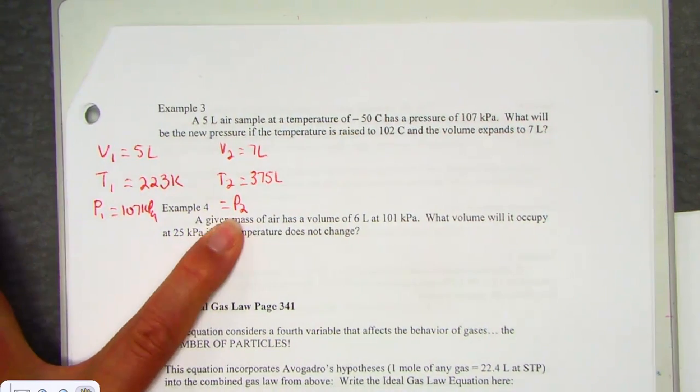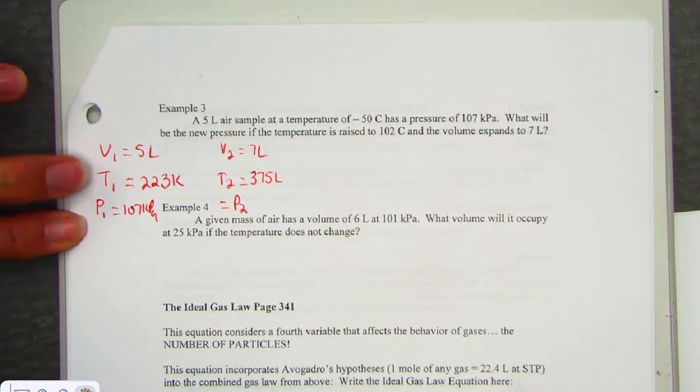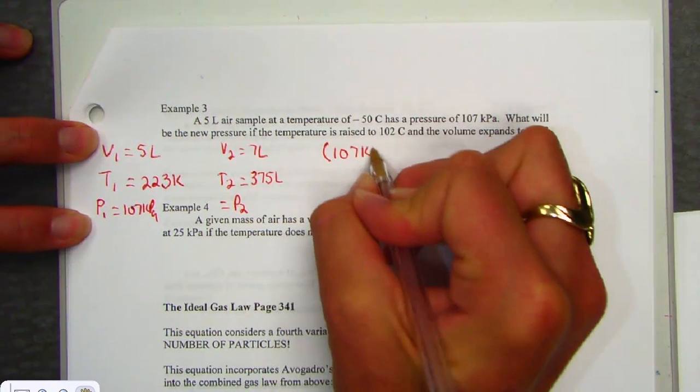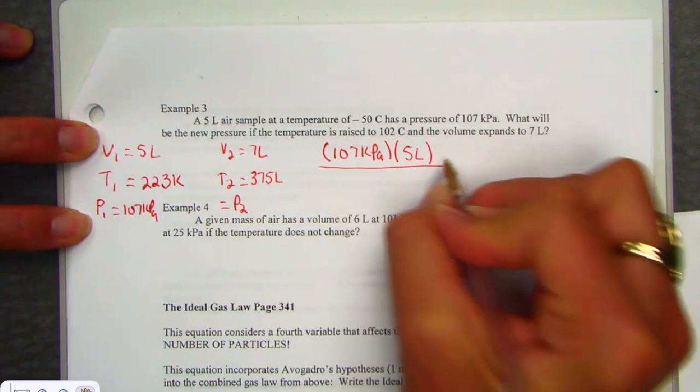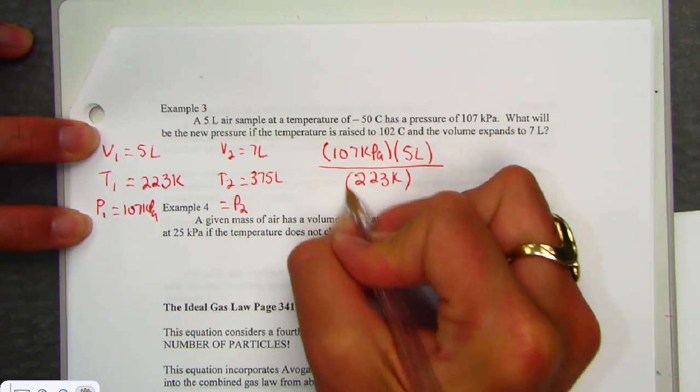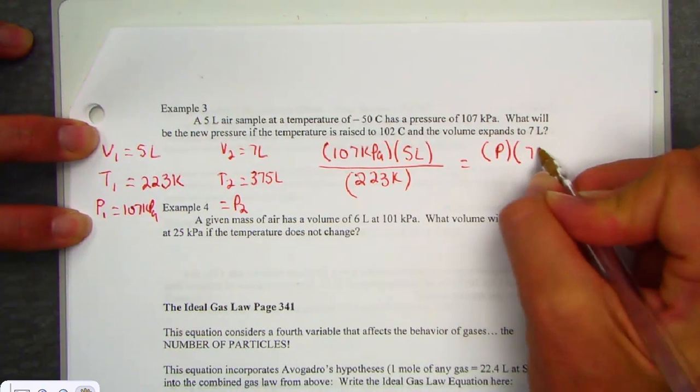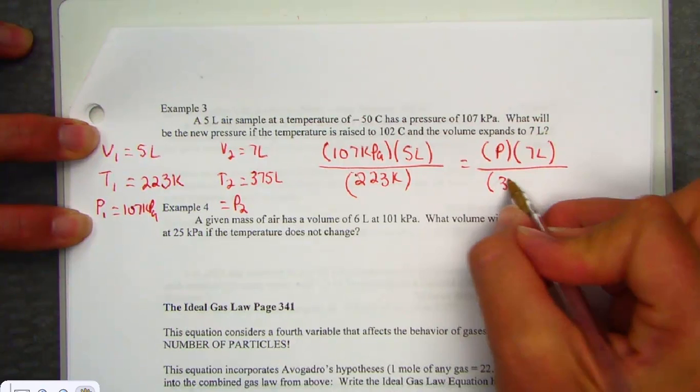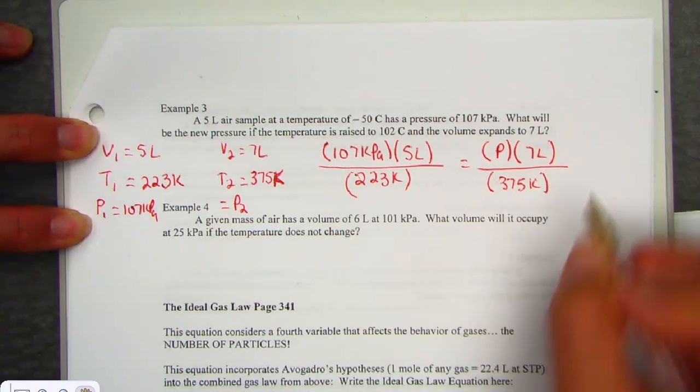So we have a new target. Last two examples, we looked for volume. Here we're going to be looking for pressure. So I've got my P1, V1, T1. Let me get those plunked in. We have 107 kPa. Volume 1, 5 liters. And our first temperature, 223 kelvins. Target is our new pressure. Volume expanded to 7 liters. Temperature warmed to 375 Kelvin units.